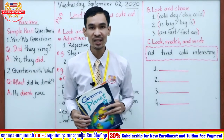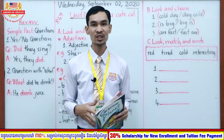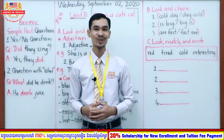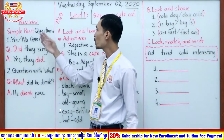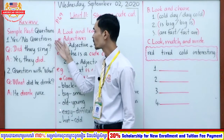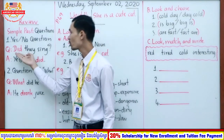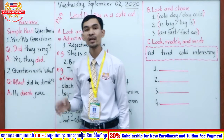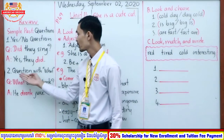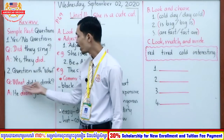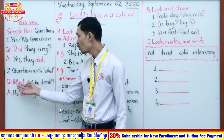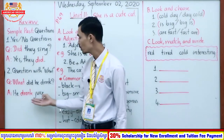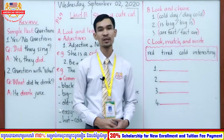The title of Unit 10 is 'Did you cook?' — it's about questions in the past. In Unit 10 we focus on simple past questions and we have two different kinds: yes/no questions and questions with 'what.' For yes/no questions we start with 'did': 'Did they sing?' — 'Yes, they did' or 'No, they didn't.' For 'what' questions: 'What did he drink?' — 'He drank juice.' When you answer, use subject plus verb plus the answer to 'what.'